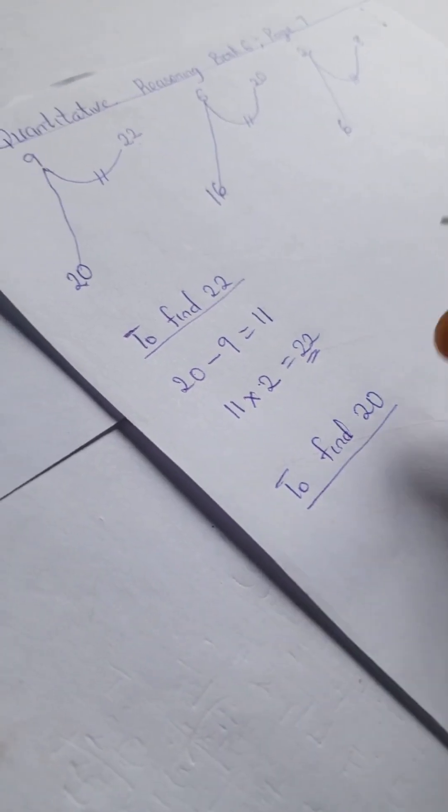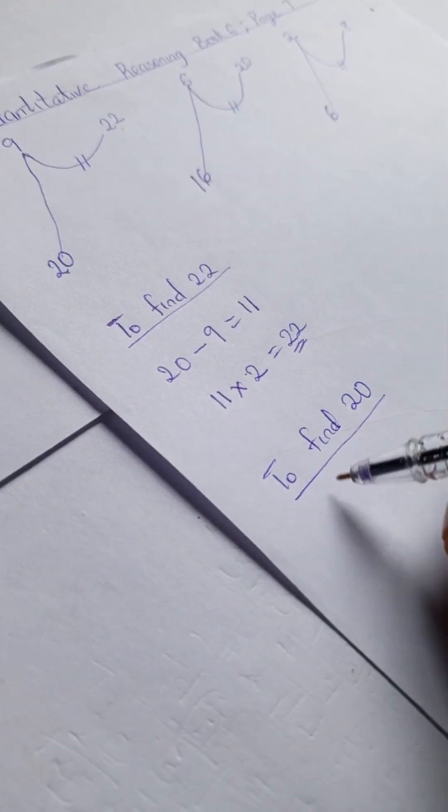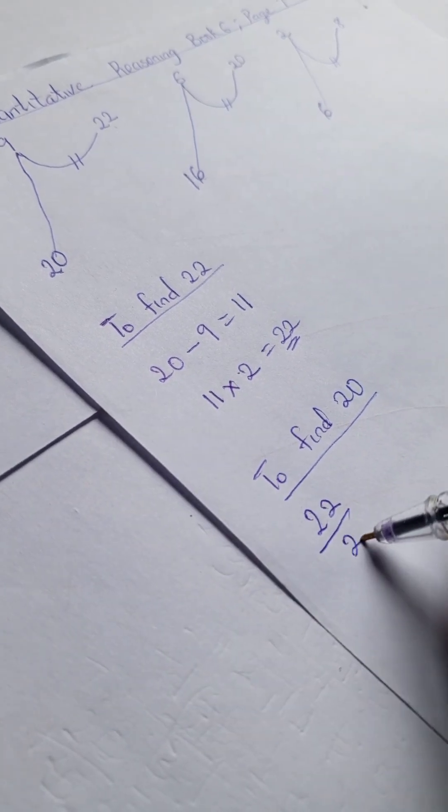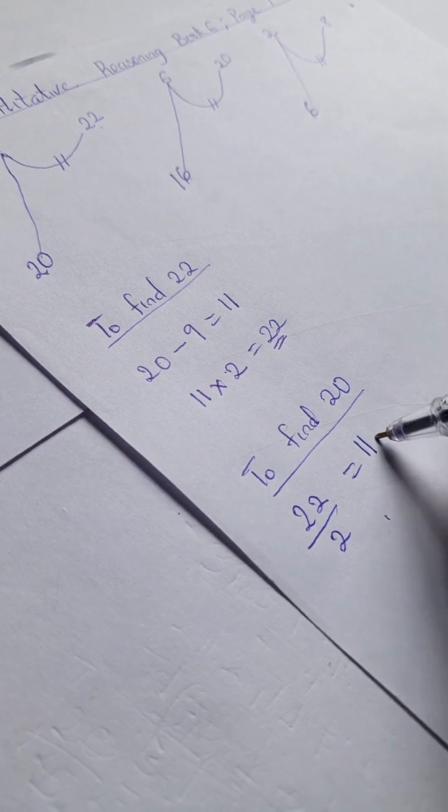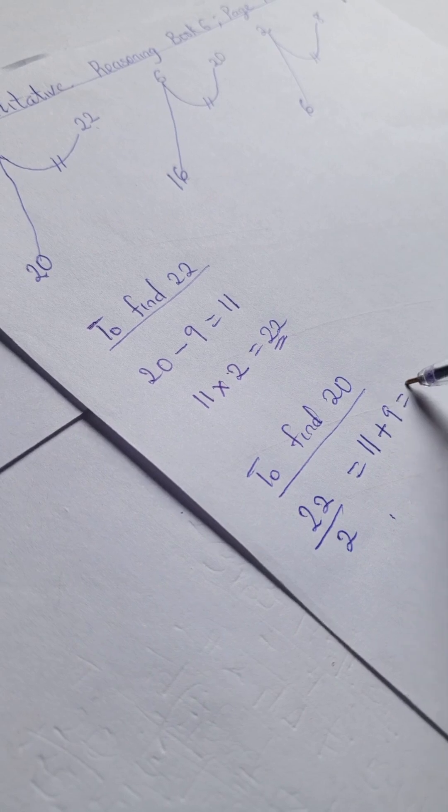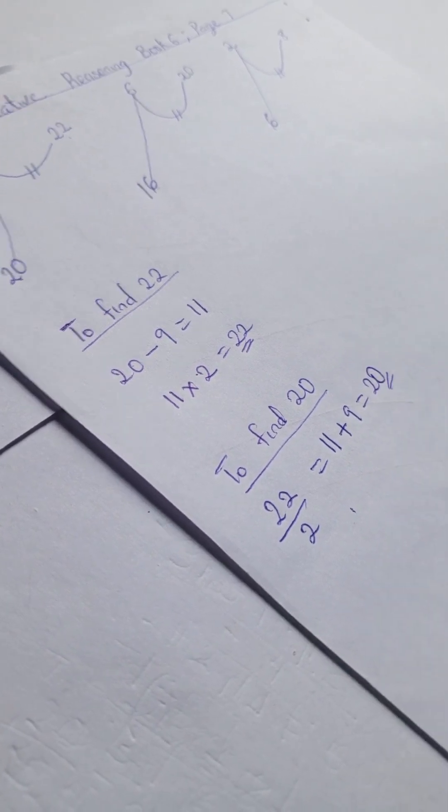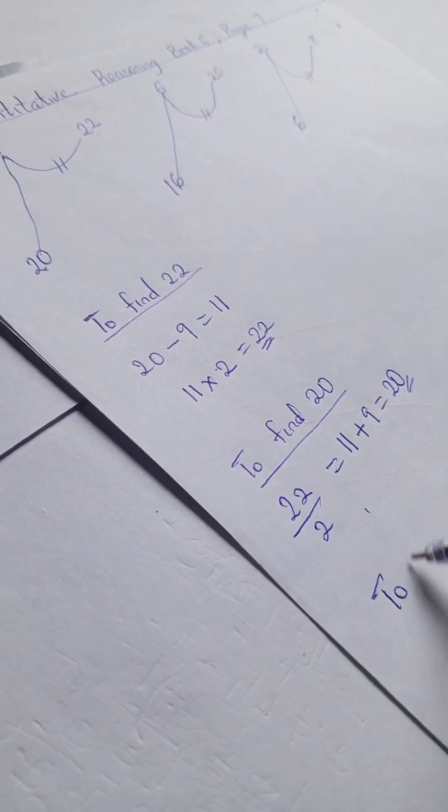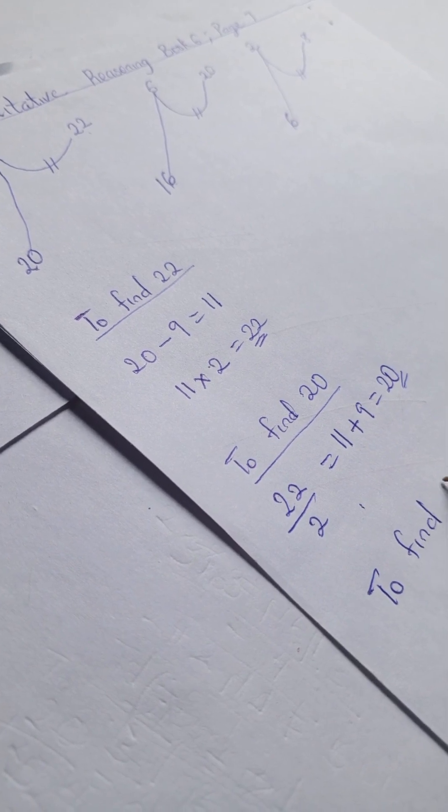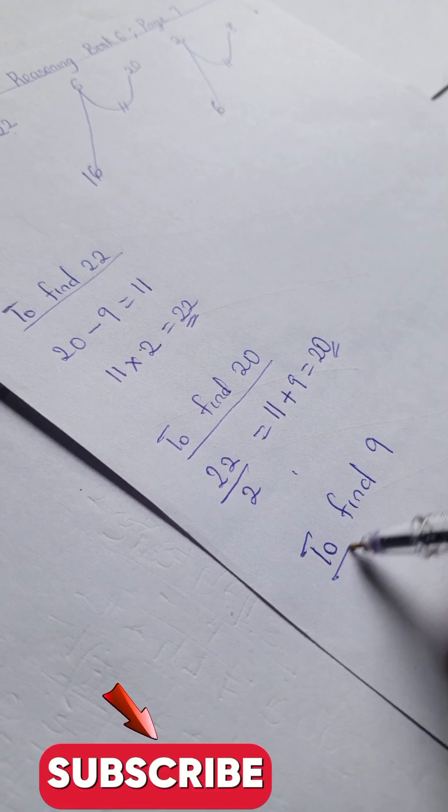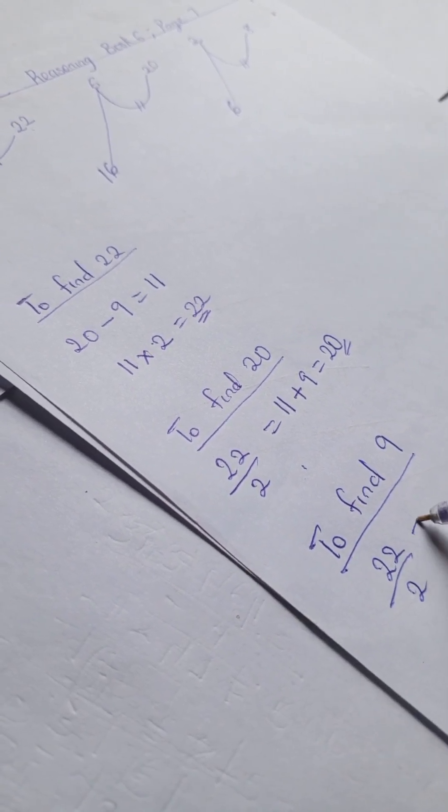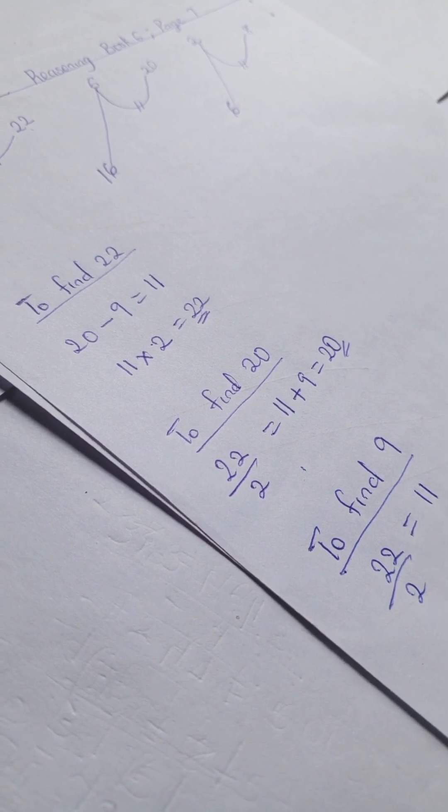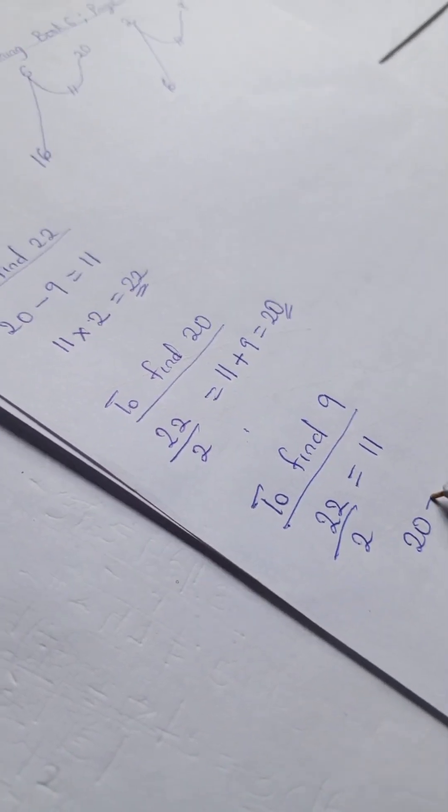To find 20, we're going to have 22 divided by 2 gives us 11, right? So 11 plus 9 equals 20. And next, to find 9, we're going to have 22 divided by 2 equals 11, and 20 minus 11 equals 9.